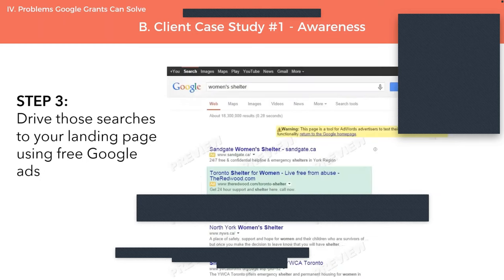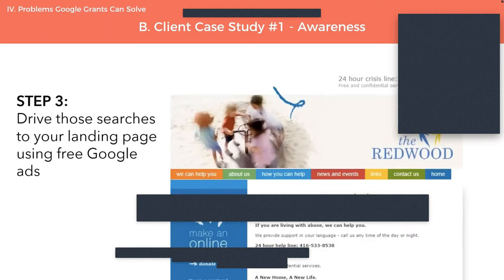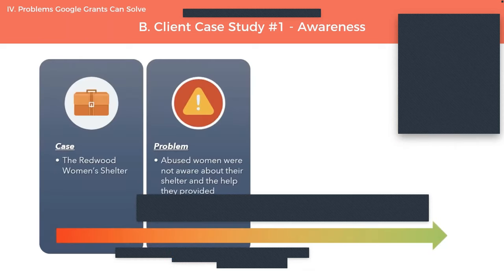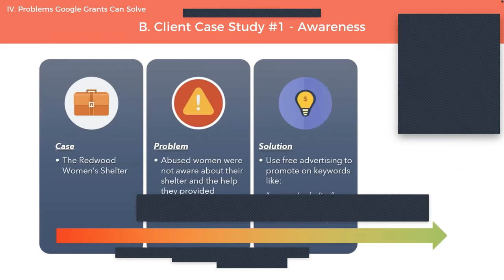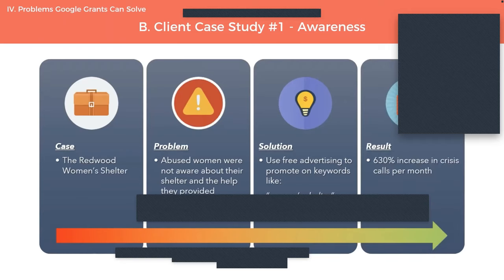In this example, 'Women's Shelter' has over 8,000 searches per month — that means it's being searched on Google over 8,000 times per month. With these keywords, they created a free Google ad. When someone typed in 'Women's Shelter' on Google, their ad appeared near the top of the page. The searcher could click on their ad and land on the designated web page, where they would find information about the crisis hotline as well as how they could help. The result was that the Redwood Women's Shelter saw a 630% increase in crisis calls per month while running the Google ads.